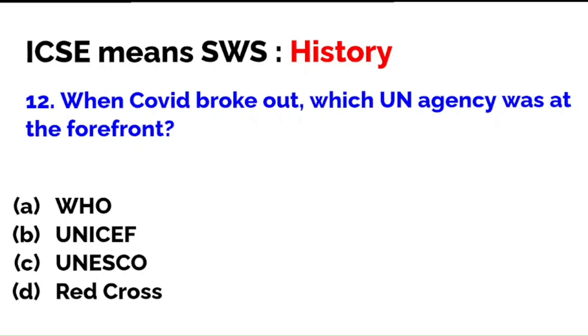When COVID broke out, which UN agency was at the forefront — WHO, UNICEF, UNESCO, or the Red Cross? Many of you could get confused between WHO and Red Cross. The correct answer is A — WHO, the World Health Organization.